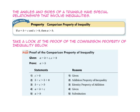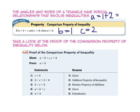The angles and sides of a triangle have special relationships that involve inequalities. The comparison property of inequalities says that if A equals B plus C, and C is greater than 0, then A is greater than B. Let's assume B is 1 and C is 2. If A equals B plus C, then A will equal 1 plus 2, or 3. Since A equals 3, then it is greater than B, which equals 1.